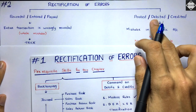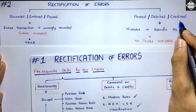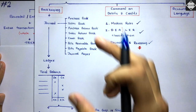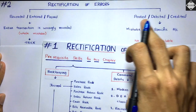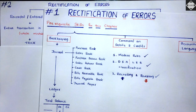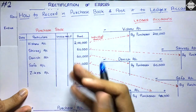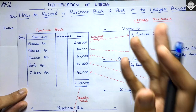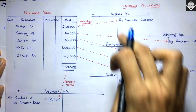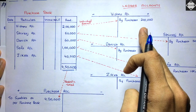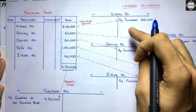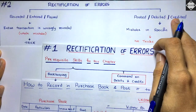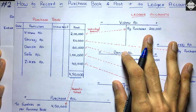Now let's come to the second category: posted, debited, credited. Where do we use these terms? In the ledger accounts — because ledger accounts have a debit side and a credit side. In subsidiary books we don't have sides, so we cannot use those terms there. For example, in the purchase book there is only an amount column and periodic total — no debit or credit side. Those terms posted, debited, credited are used in the ledger T-accounts.